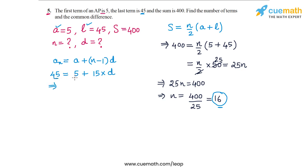So from here we get 45 minus 5, that's 40. So 40 is equal to 15D. And this means that D is equal to 40 by 15.